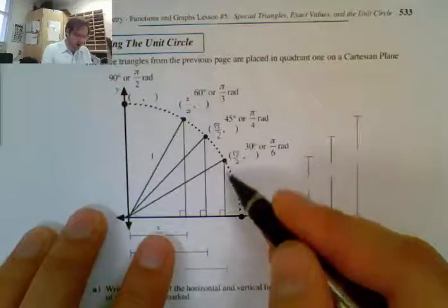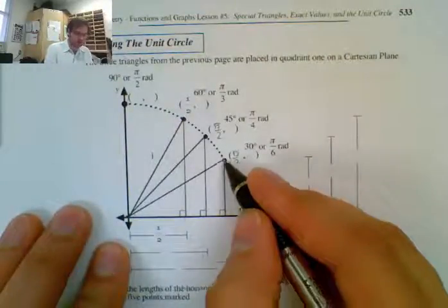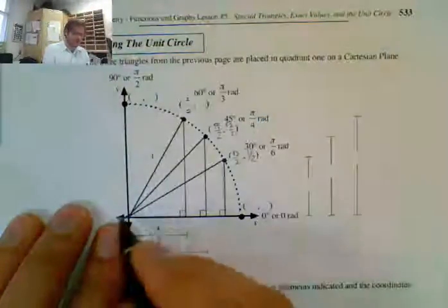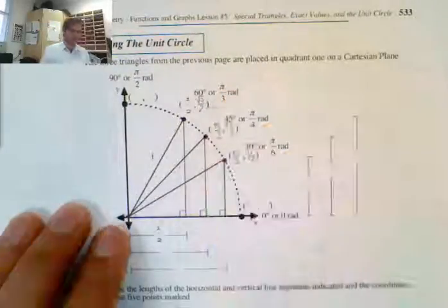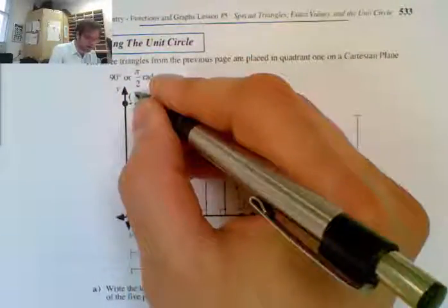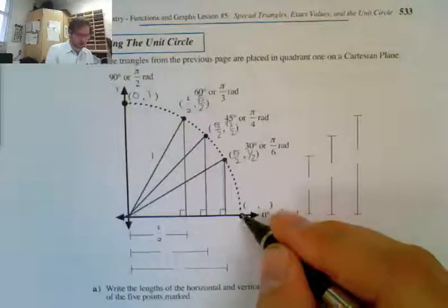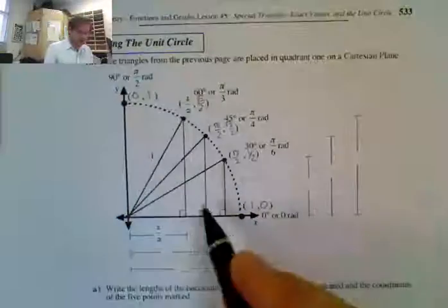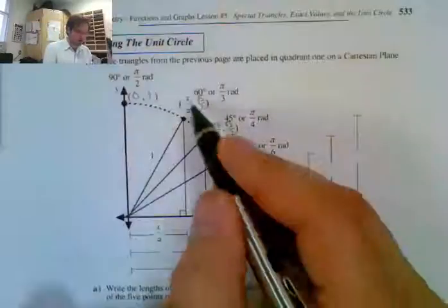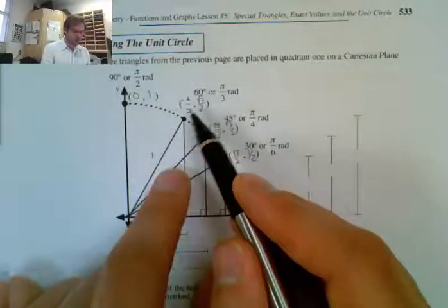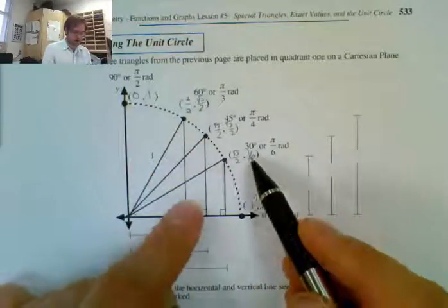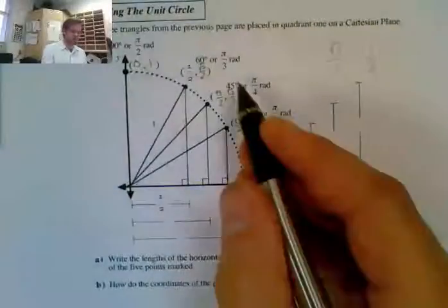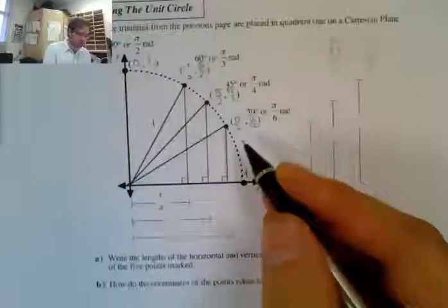For y values, 30° has the smallest y of 1 over 2; the next is √2 over 2; then √3 over 2, because 60° is the biggest. At 90° we have all y and no x — so (0, 1). At 0° we have all x and no y — so (1, 0). A quick pattern: x goes from big to small (√3, √2, √1) and y goes from small to big (√1, √2, √3) over 2. They're always opposites at each angle, and equal at 45°.